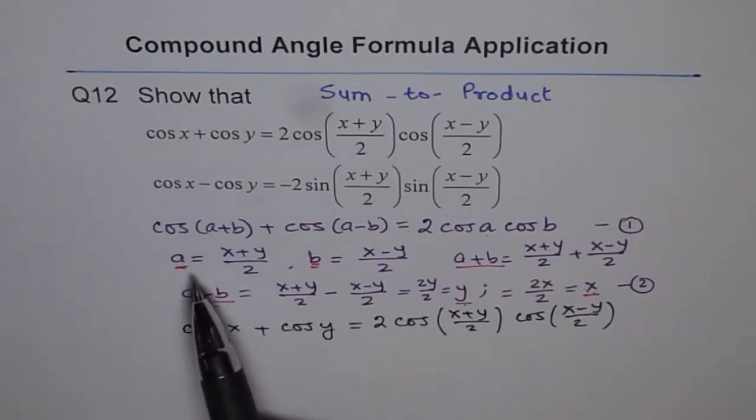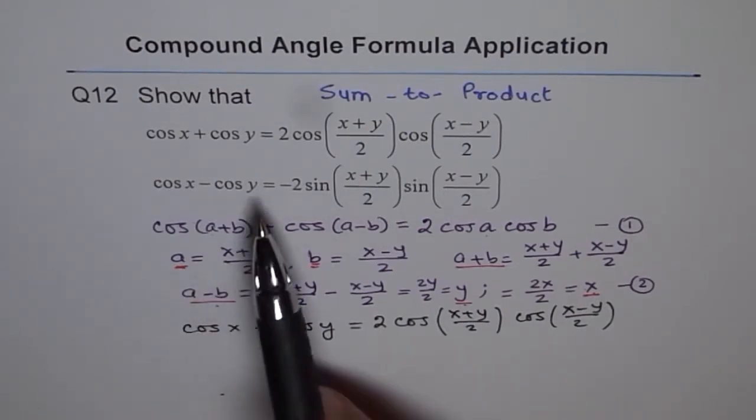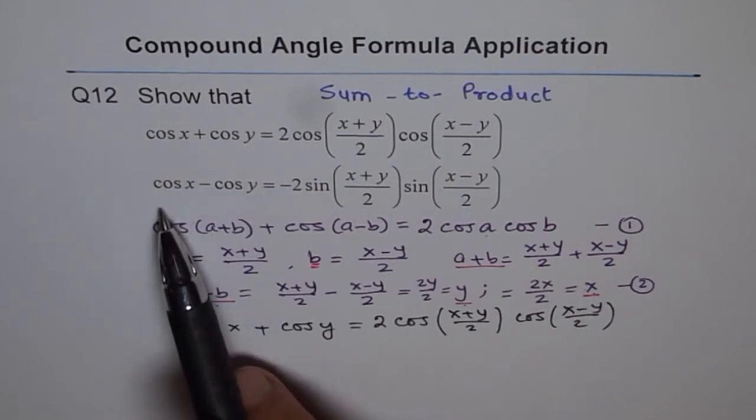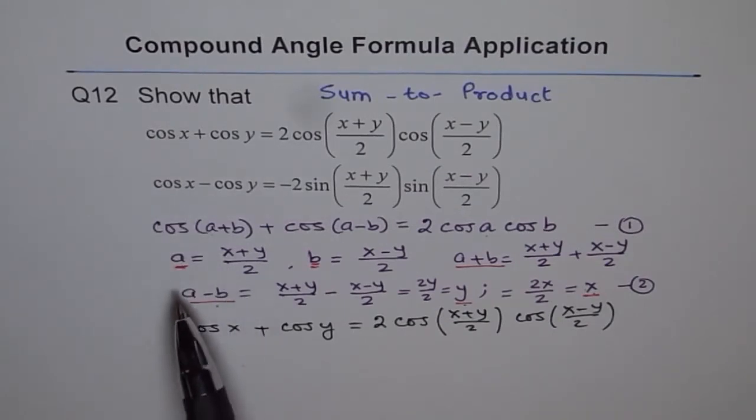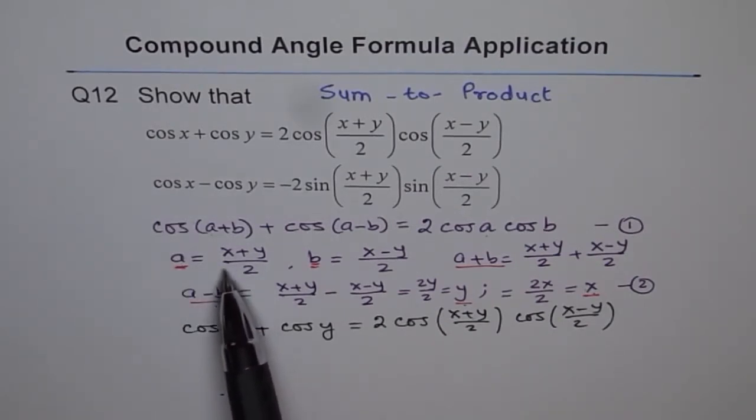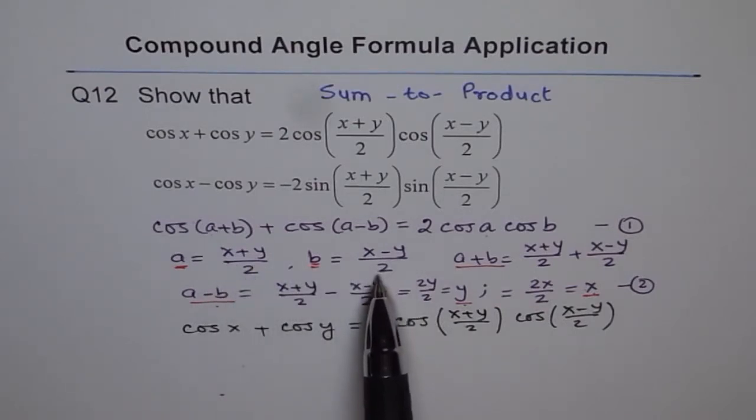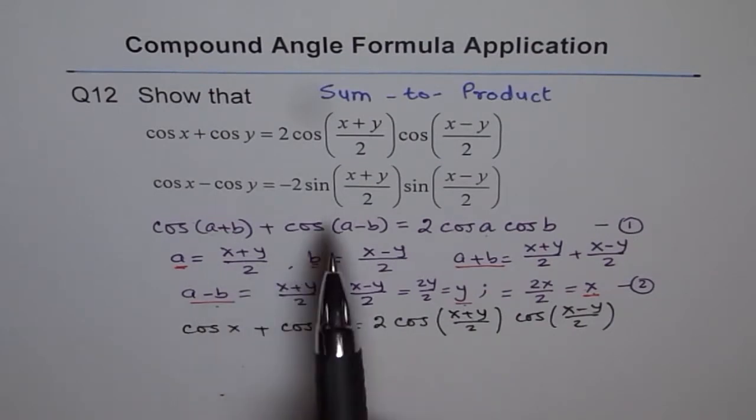Now, you have to do exactly the same substitution for similar questions, whether they are in cos or in sine. So in this question number 12, we are doing for cos one of them. You do the next yourself. So substitute a equals to x plus y by 2 and b equals to x minus y by 2 and figure out what is a plus b and a minus b and then get your result.